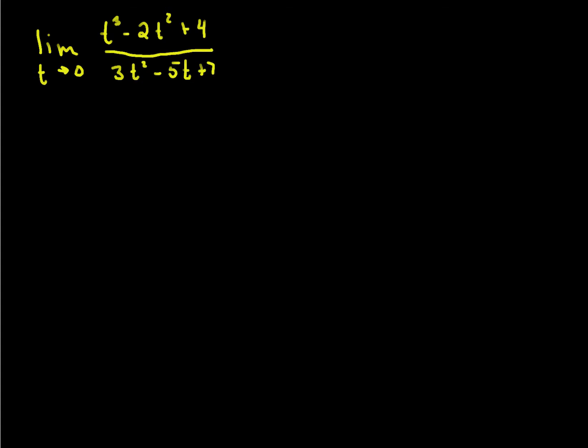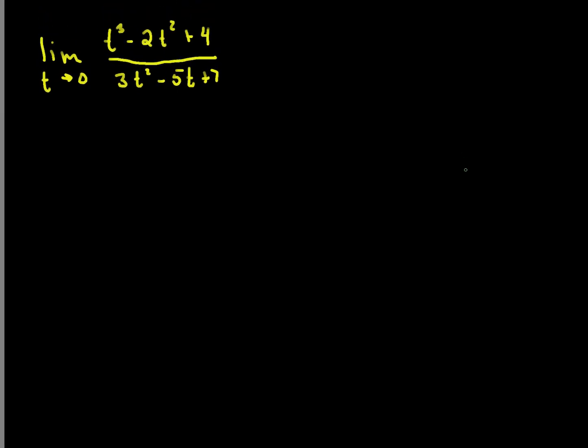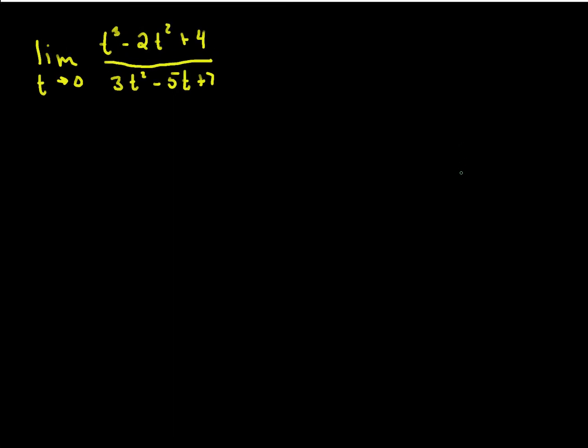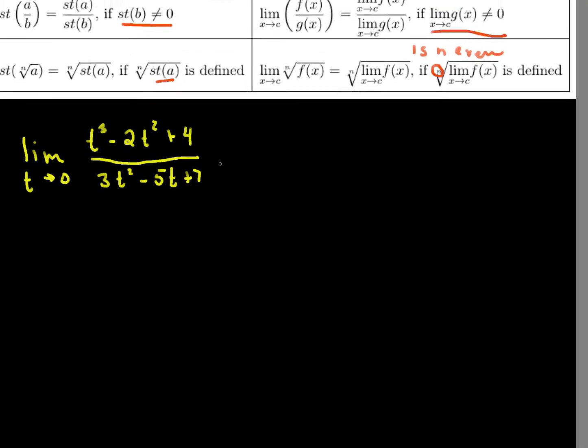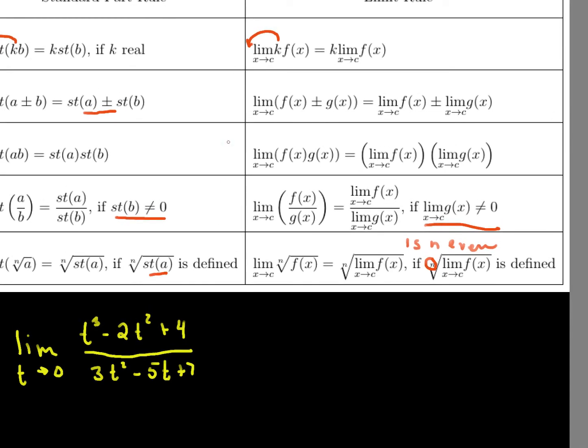In all of the previous examples, we would have computed the, we would have said, let's let h be infinitely close to 0, since that's the limit, and compute standard parts. But I want to use the rules here.